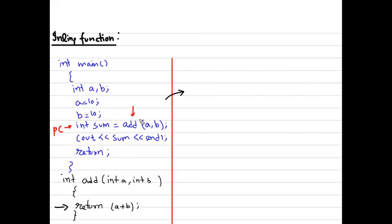The program counter will call the add function, pass the values, check the declaration, pass the parameters, and the CPU will come to execute the function body. It will return back and then the program counter will reach the next line. So there is a switching overhead — to access this small logic we are spending too much time switching back and forth to the function.